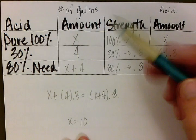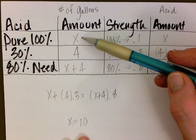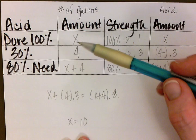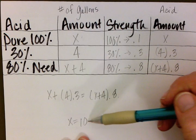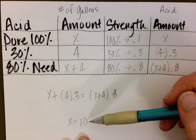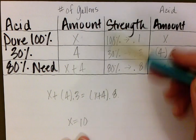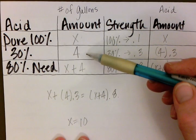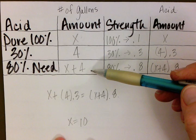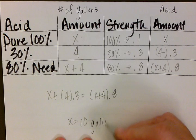We had assigned x as the number of gallons of the pure 100% acid solution, and the question was how much pure acid should we mix in. So we have solved our problem: the amount of pure acid we need to add to the 30% solution to get the 80% solution is 10 gallons.